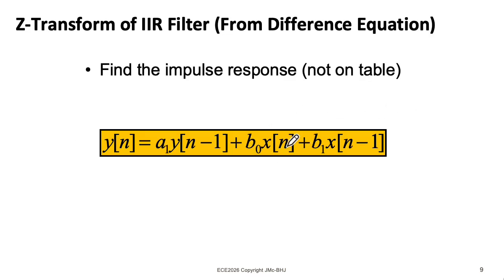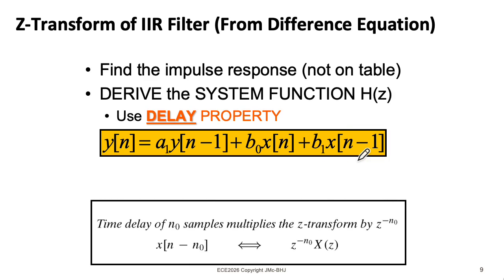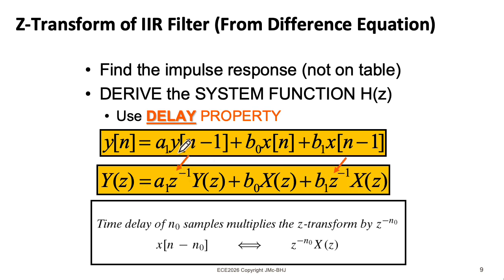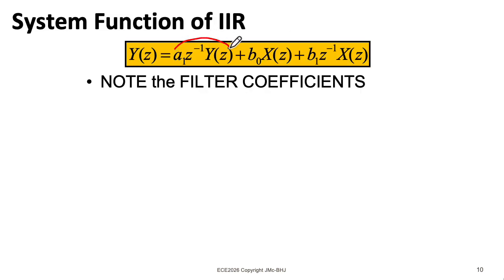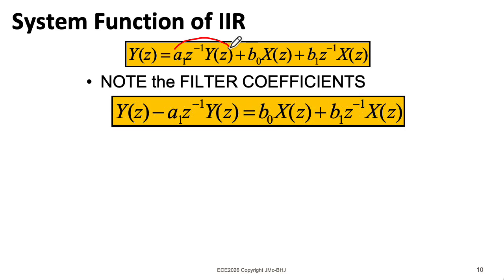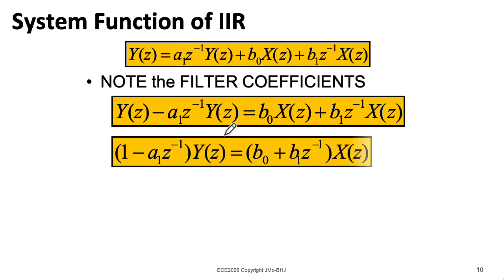Let's apply this idea to this more complicated example, where we added this b_1 x[n-1] term. We can apply the same kind of idea of using the delay property, where in addition to using it on this y term, we're now using it on this x term, where the x[n-1] gives us this z to the minus one times the big X in z transform land. I once again take this term on the right hand side with capital Y, and move it over to the left hand side, yielding the minus sign here to get y on one side. So I can factor capital Y out of all the terms on the left, and capital X out of all the terms on the right.